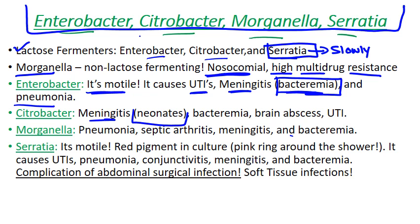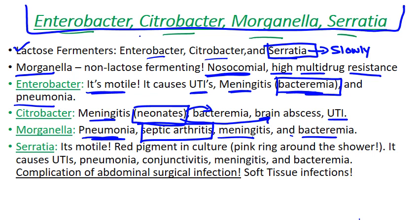Citrobacter is another big cause of meningitis in neonates. Because of that, we also expect bacteremia and brain abscesses, as well as UTIs. Morganella — we're a little more concerned about pneumonia as opposed to meningitis, though meningitis is still possible, as is bacteremia. Morganella has also been associated with septic arthritis. Some organisms have a predilection for the joint space, and the resulting inflammation there can be very painful — that's septic arthritis.